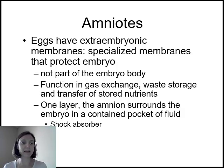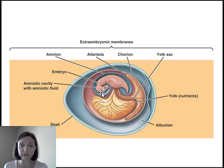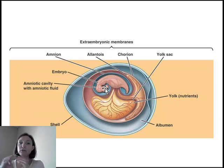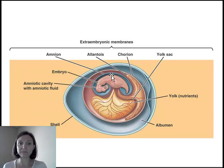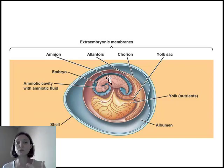If we look at a generic amniotic egg, here's the actual embryo itself, and it's surrounded by the amniotic cavity — the amniotic fluid. That's basically a self-contained pond inside the amniotic cavity, so that way it doesn't dry out. Then we have even more extra embryonic membranes outside of that. Outside of the amniotic cavity, we see the allantois. This is a membrane that functions in waste disposal — getting rid of any metabolic waste that the embryo is producing.